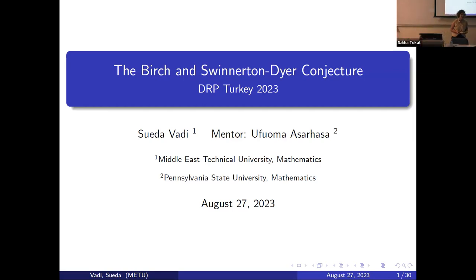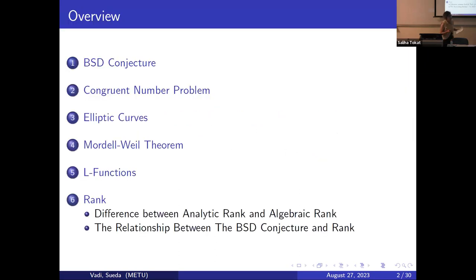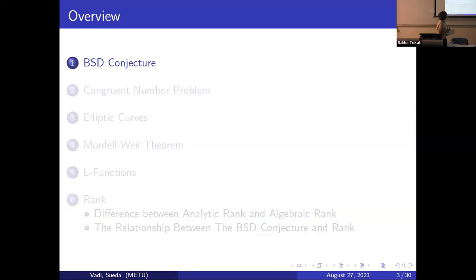I am Soyada, and the topic I'm going to try to explain to you today is the Birch and Swinnerton-Dyer conjecture, but a brief version. From now, I'll call it the BSD conjecture. BSD conjecture has been selected as one of the millennium prize problems, which offers a one million dollar prize for the first correct proof. To understand what we are dealing with, let's first take a look at the BSD conjecture statement.